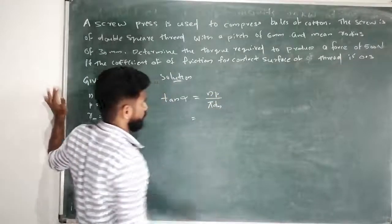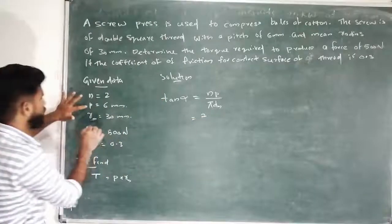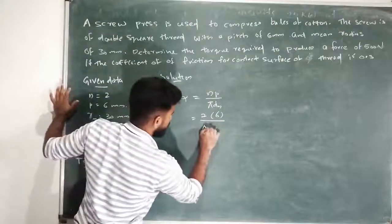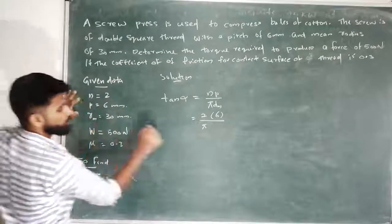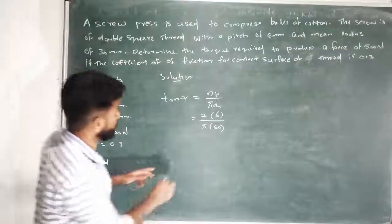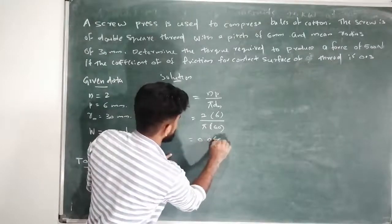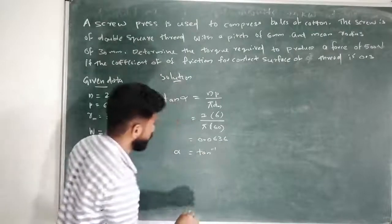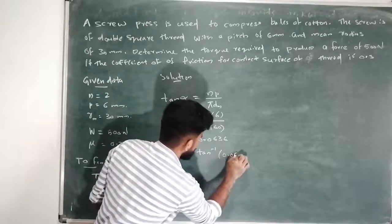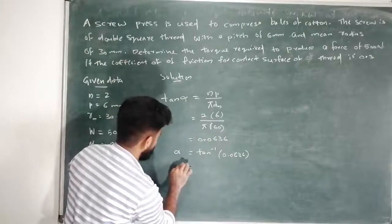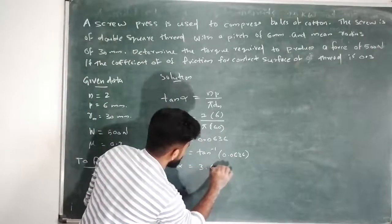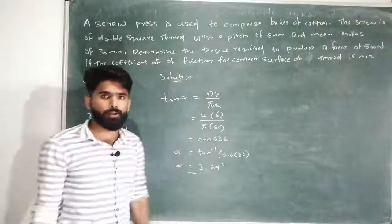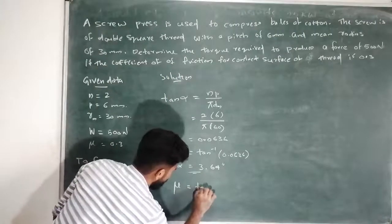Alpha equals 6 divided by pi times d_m times 2, that means 60. So this is 0.0636. Alpha equals tan inverse of 0.0636, that is equal to alpha equals 3.64 degrees.